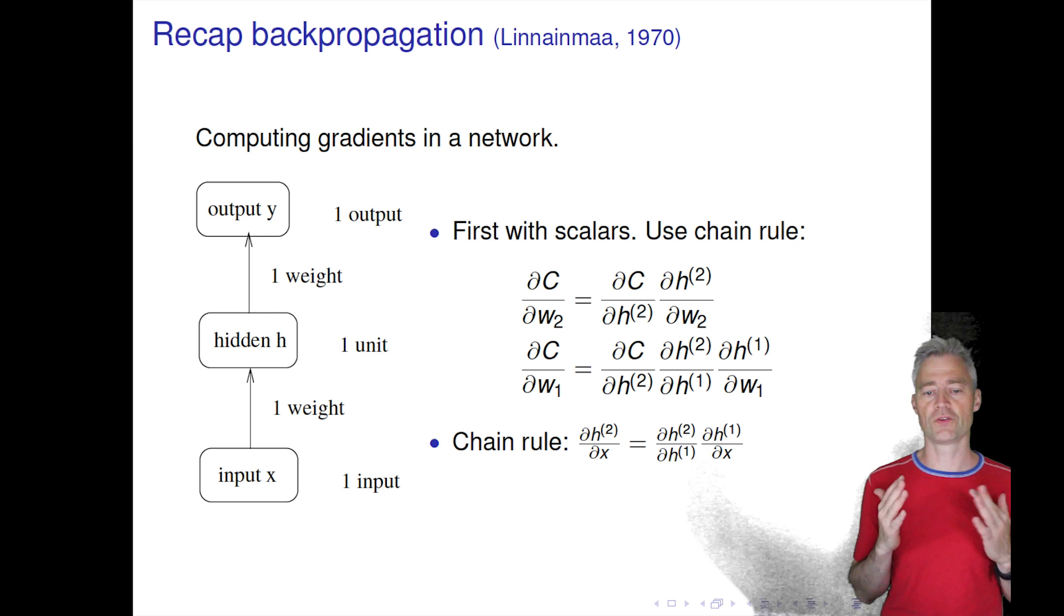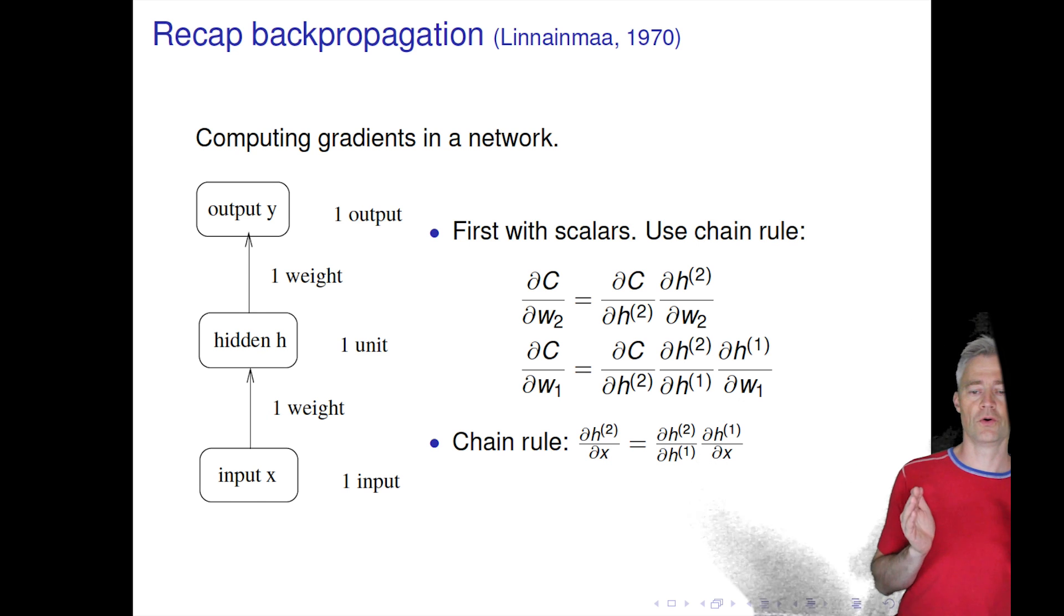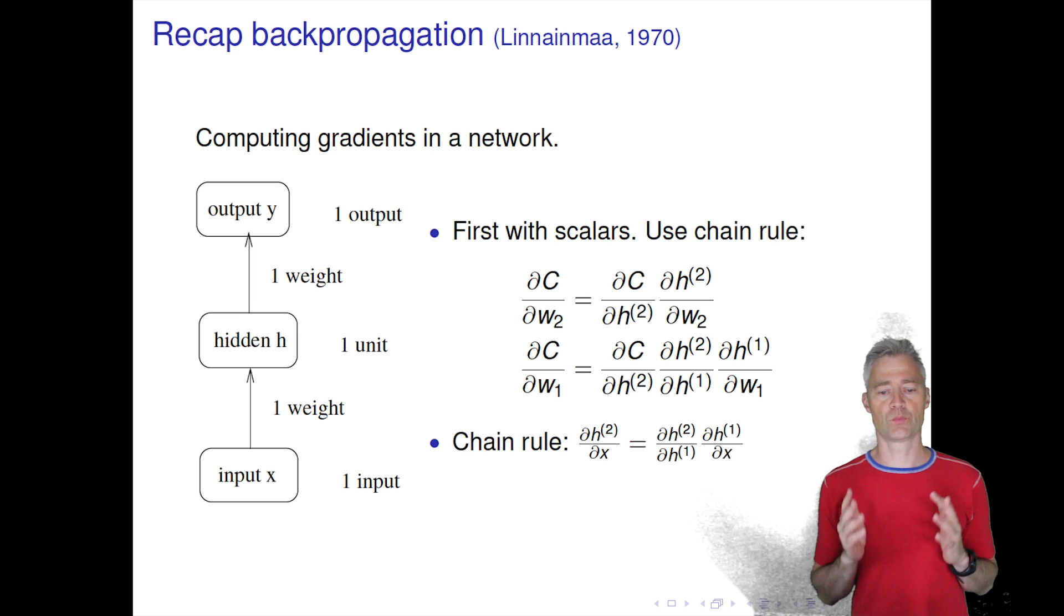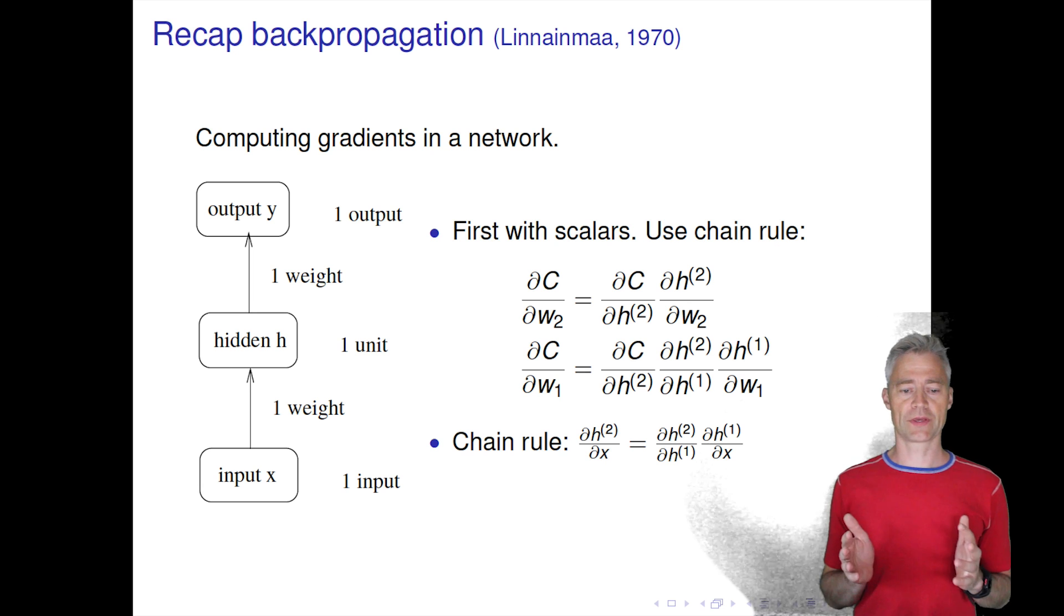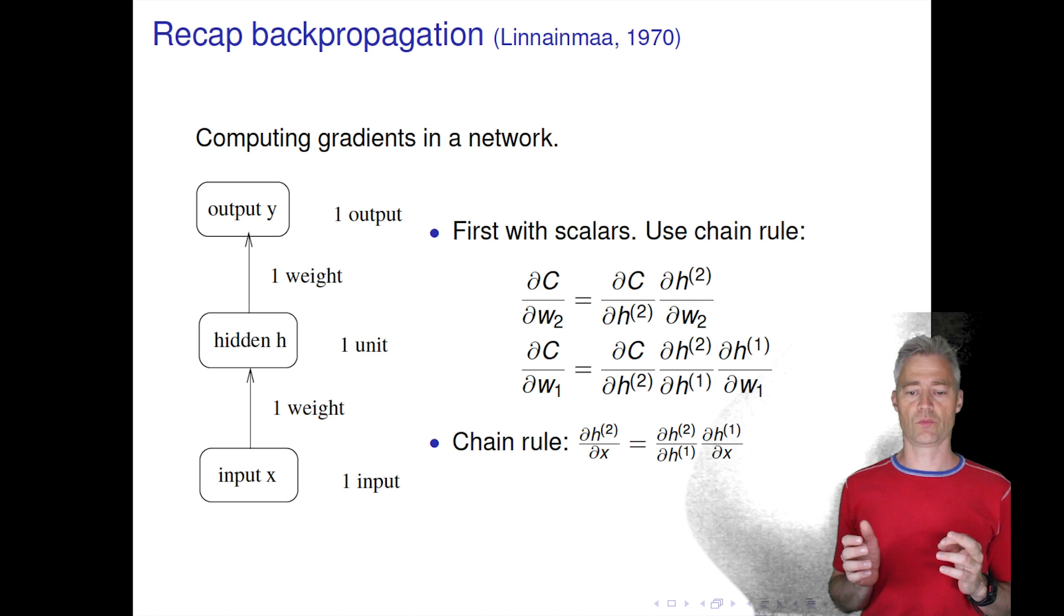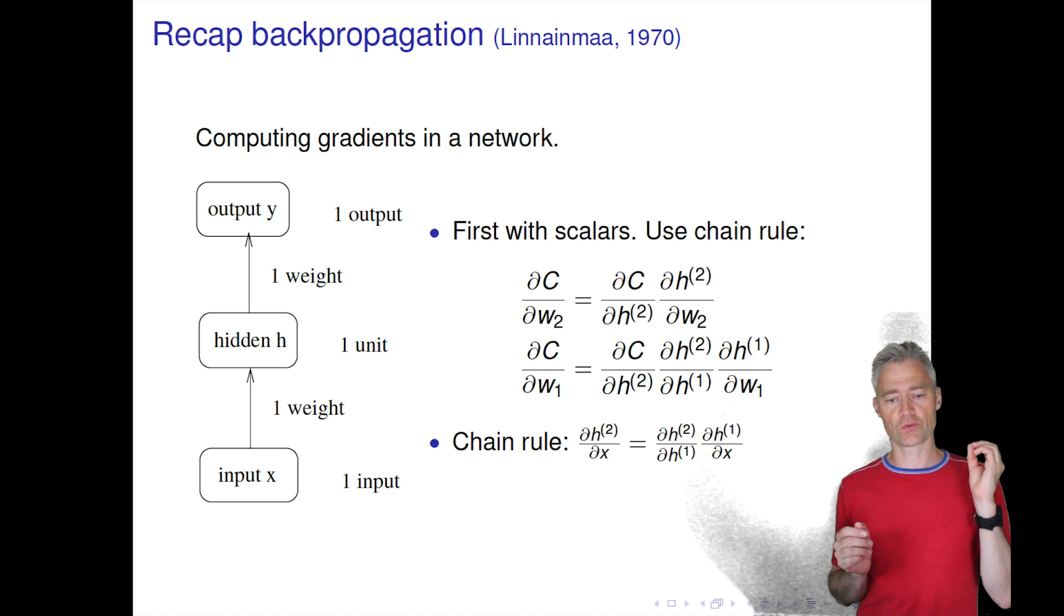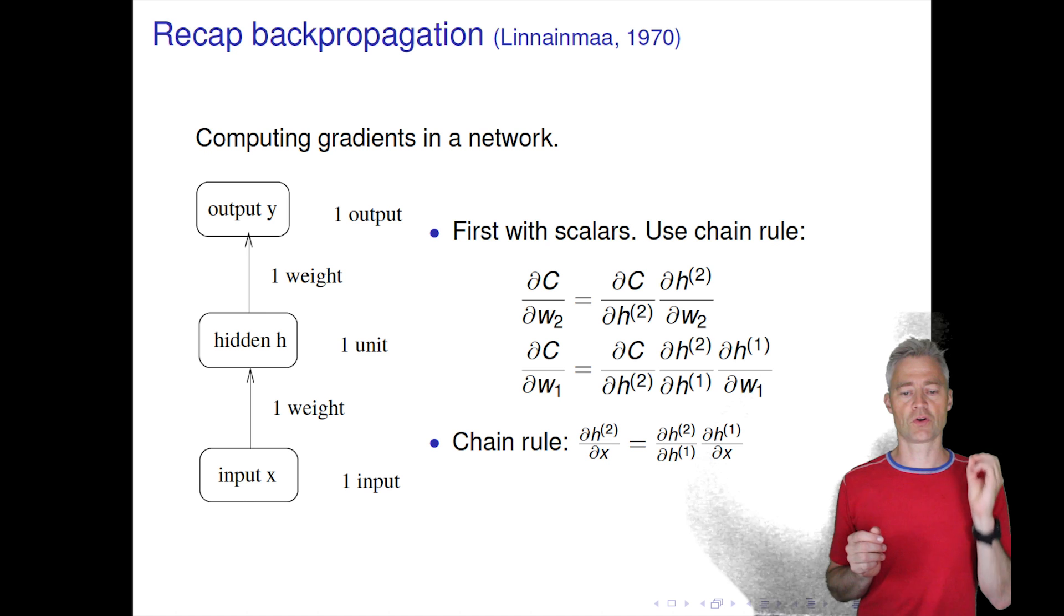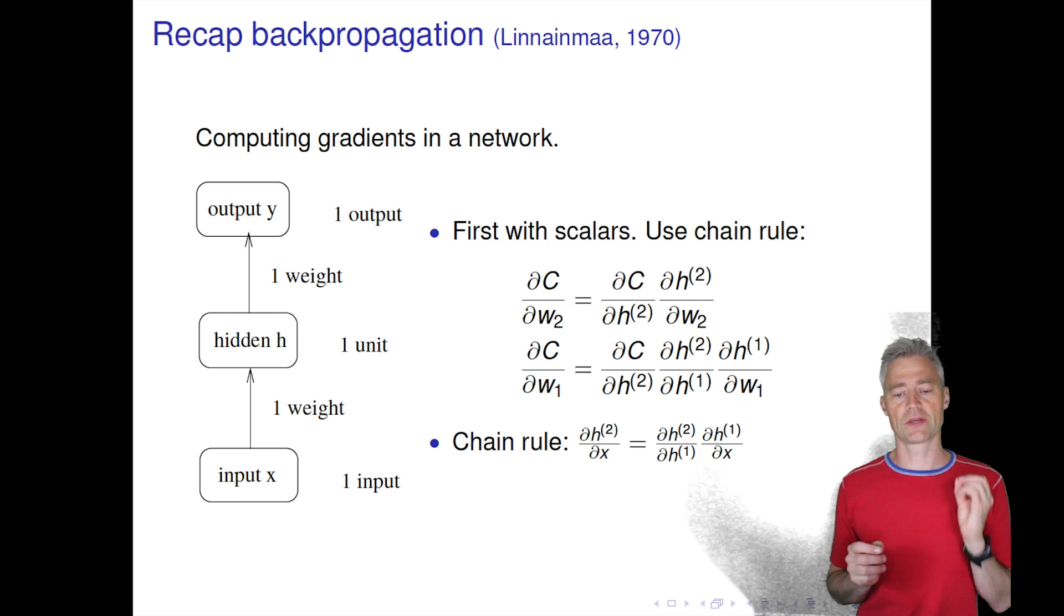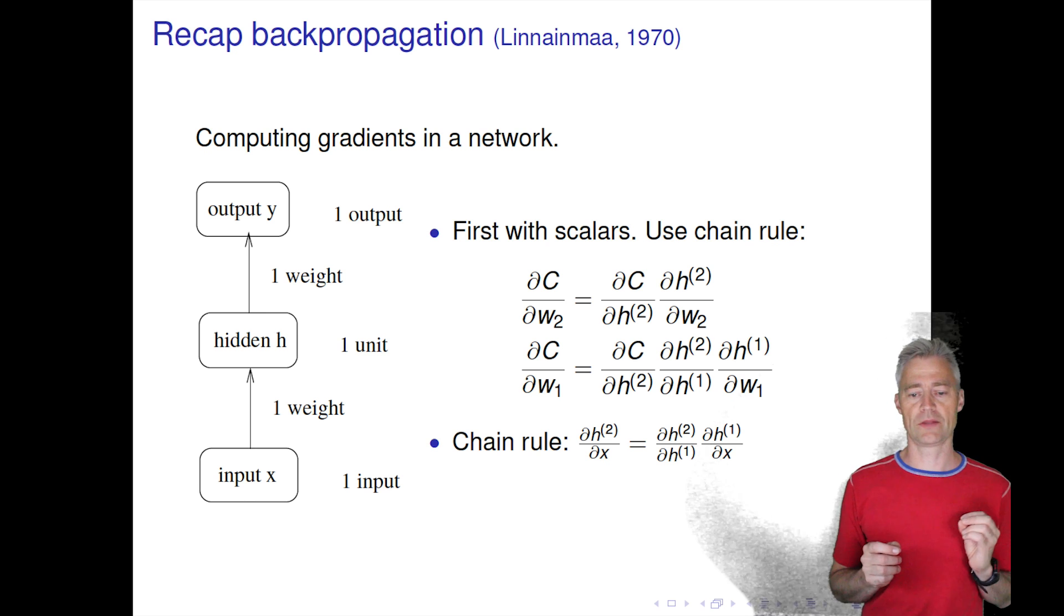Let's just go back and recapitulate what we learned about backpropagation for a feed-forward neural network. We have these update rules where we take the derivative of the cost function with respect to the weights in the second layer, and we do that by the chain rule.